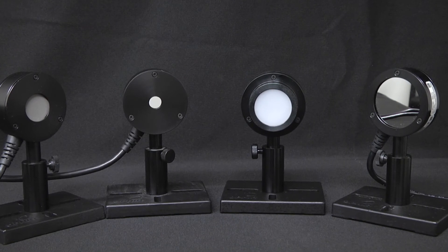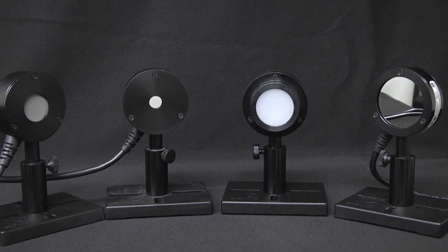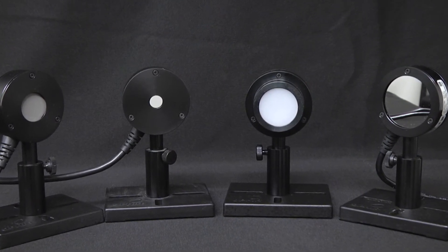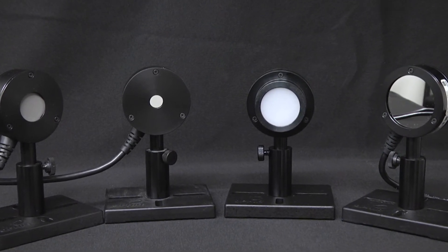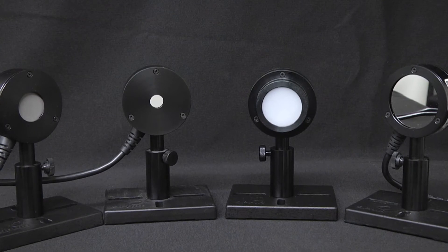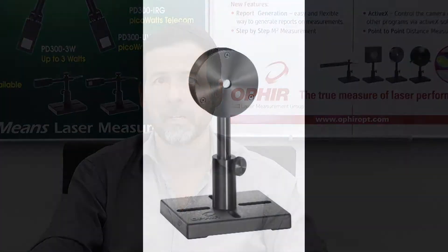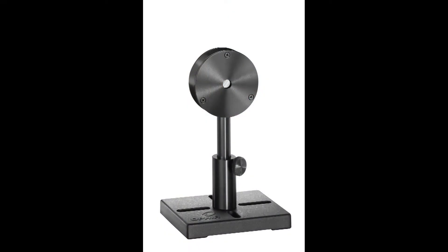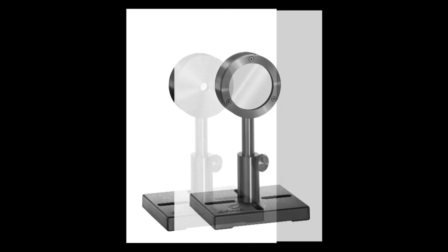The choice of sensor depends on the order of magnitude of the energy being measured, the spectral region, beam diameter, pulse width, and repetition rate. Ophir offers sensors for energies all the way down to picojoules and up to tens of joules, for small and large beam diameters.